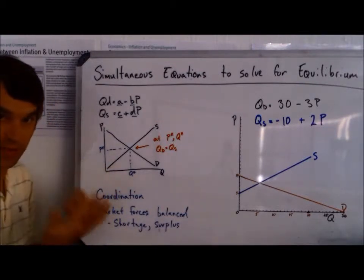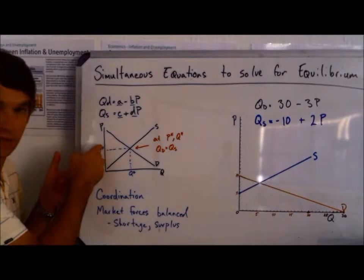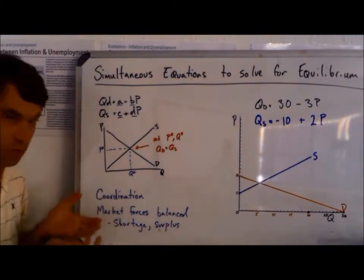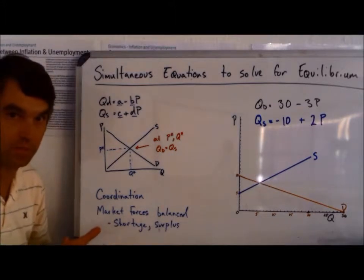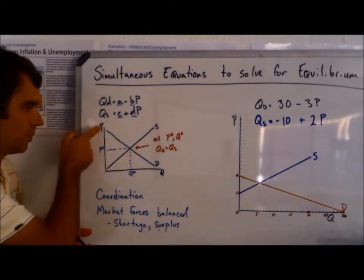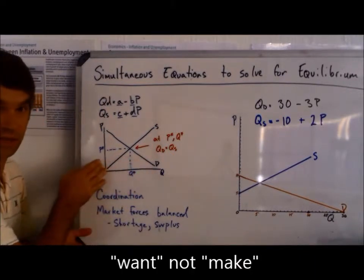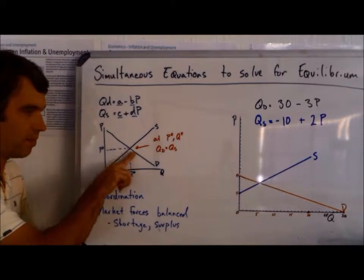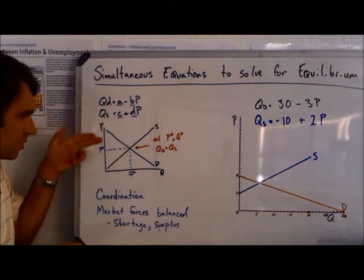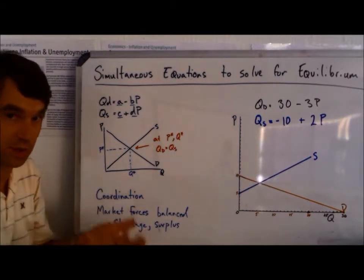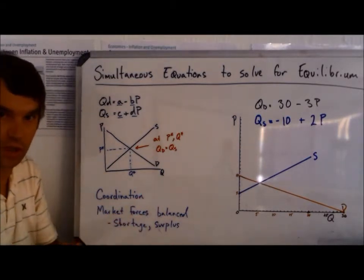Well, suppliers, what's best for them is as the price goes up, they want to supply more and more because price going up is a good thing for them. Demanders, as the price goes up, they're going to demand less and less. Or we can say as the price goes down, they're going to want to buy more and more. So as the price goes down, it's good for them to use their scarce resources, their money, to buy more of this good.